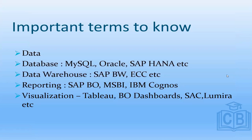Important terms to know in business intelligence: Data — we can say data is the new oil. If we properly use data we can lead the industry. Data is a meaningful collection of information. Database — every company uses their own databases to store data, such as MySQL, Oracle, or SAP HANA. These are relational databases that store data in the form of tables.